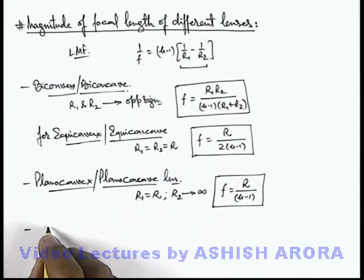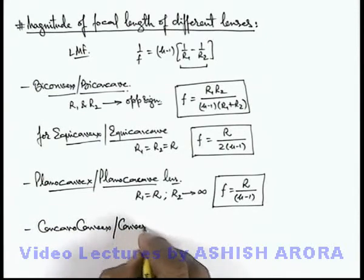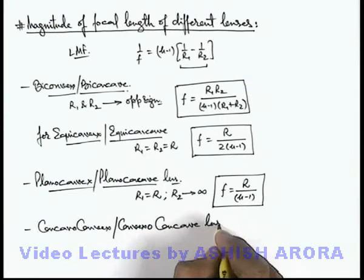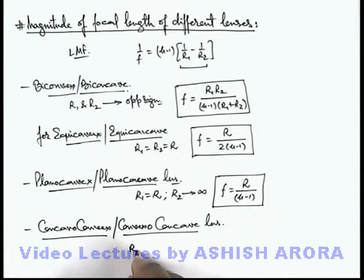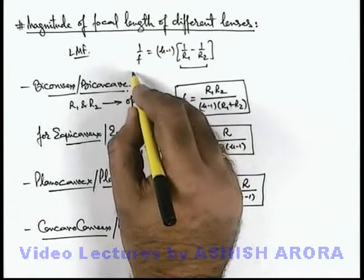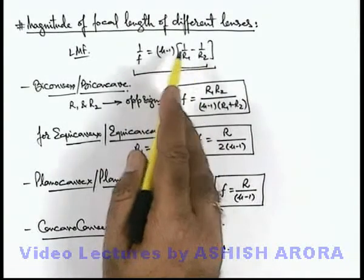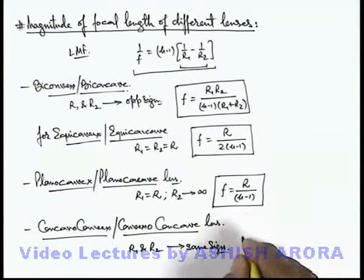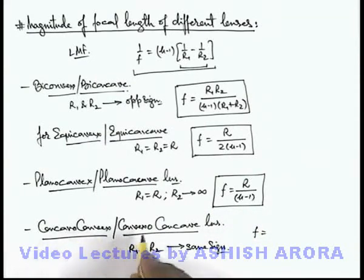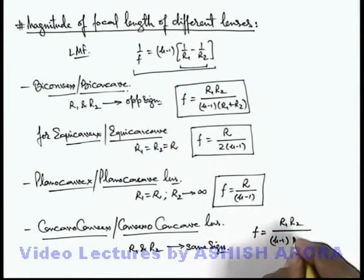And if we talk about concavo-convex or convexo-concave lens, these are the lenses in which we know that R₁ and R₂ both are on the same side of lens, so they'll always have same signs. In sign convention, if we use it in lens maker's formula, both of these terms will have opposite signs here. So on simplifying, the focal length of concavo-convex or convexo-concave lens can be given as f = R₁R₂/(μ-1)(R₁-R₂).